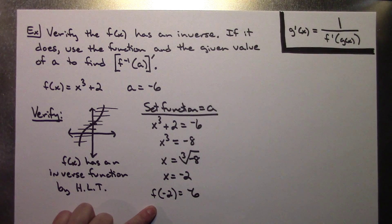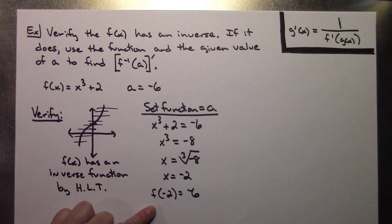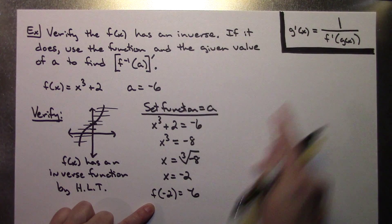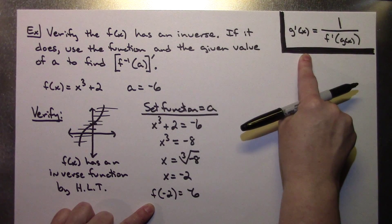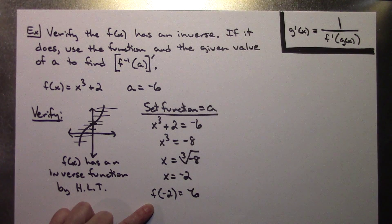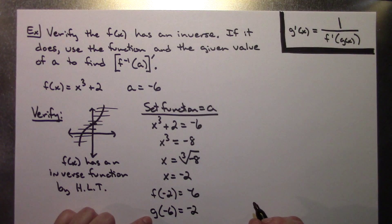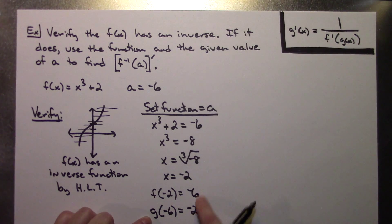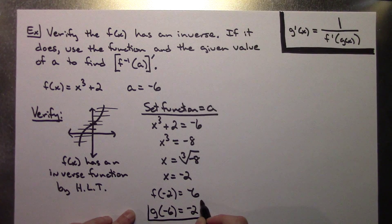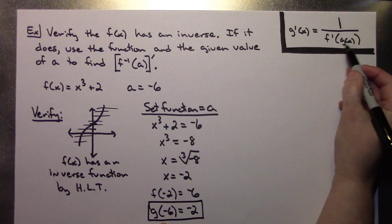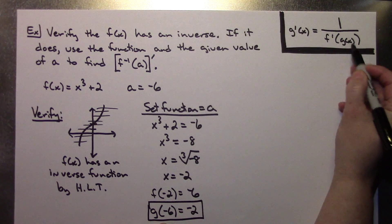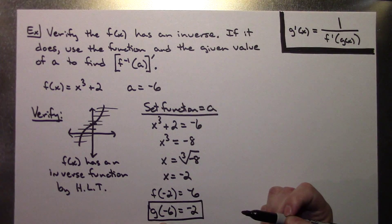Now why I need this is because inverse functions — the domain of the function is the range of the inverse and vice versa. So for the formula here, my inverse function is going to be g. If I know f of negative 2 equals negative 6, I can reverse the domain and range and say g of negative 6 equals negative 2. And I can do that without even knowing the inverse function. This is going to be something we'll use later in the formula — it's the value of our inverse function at the given value we're looking for.